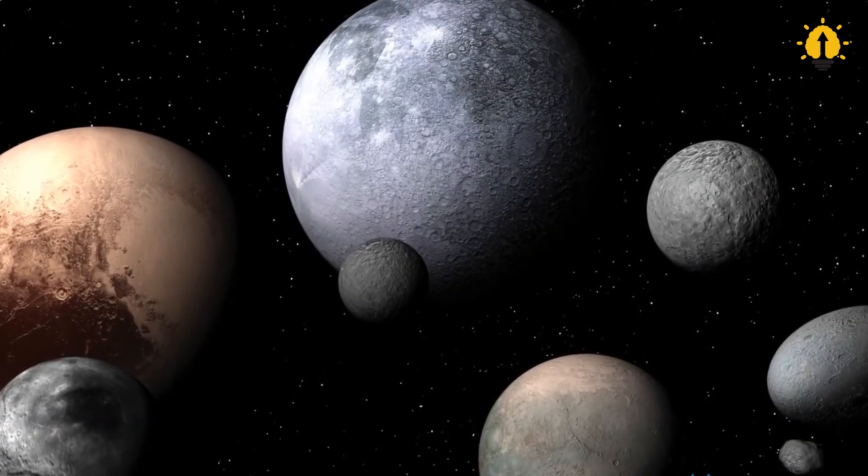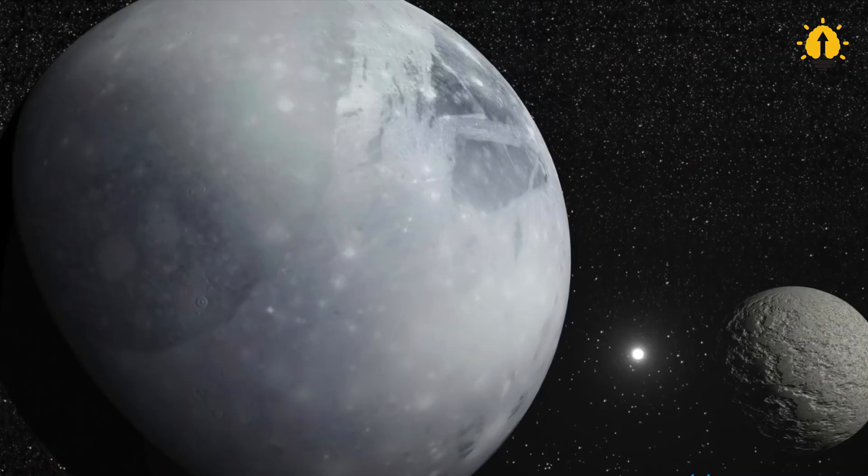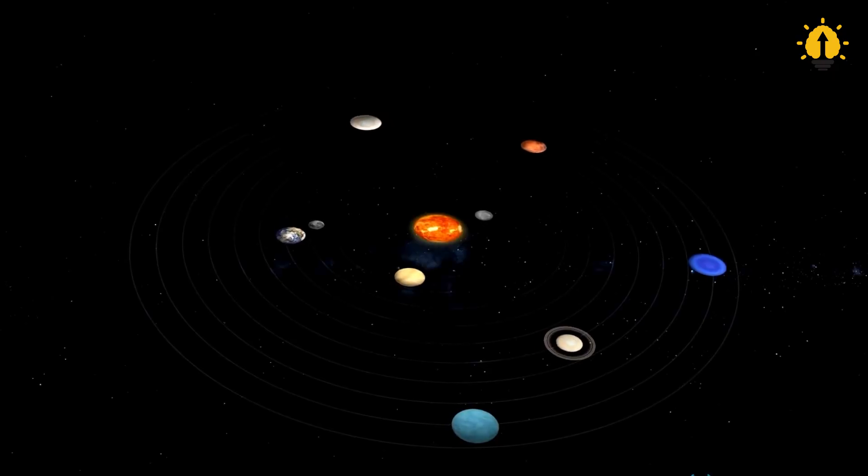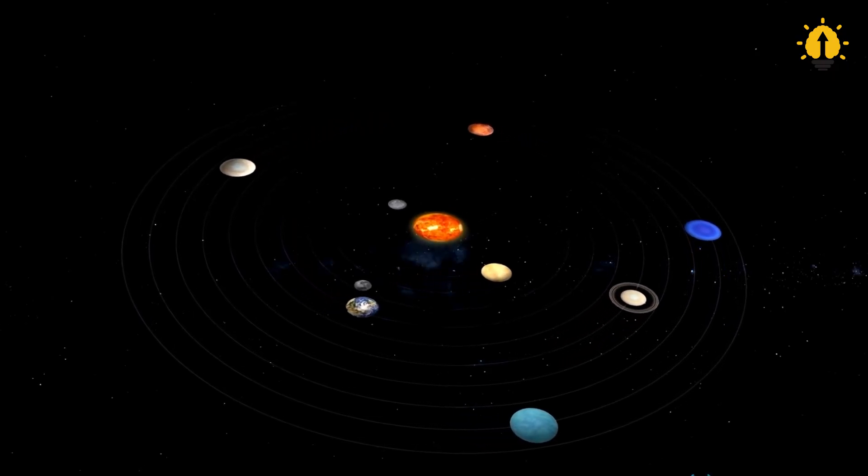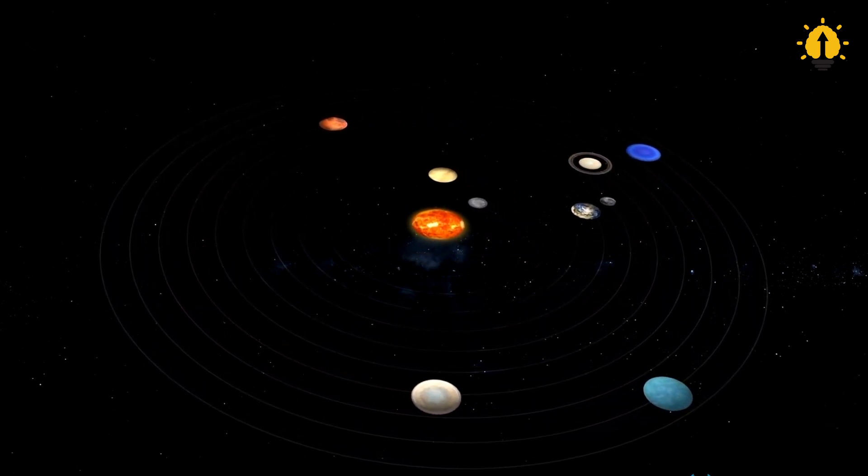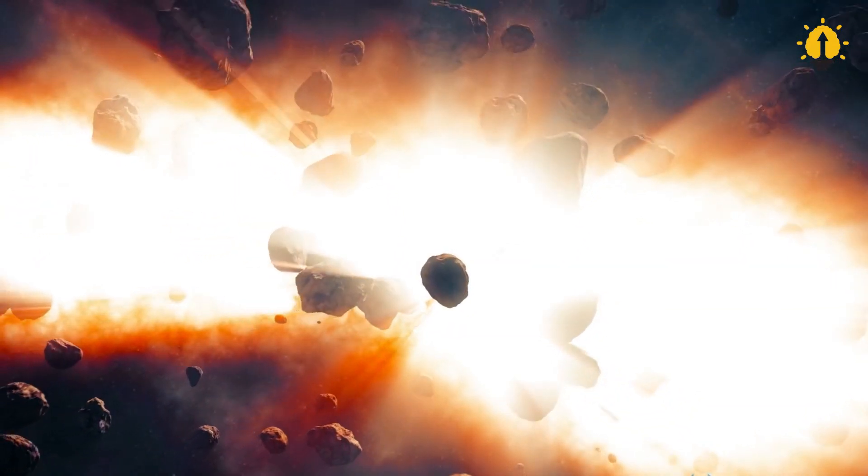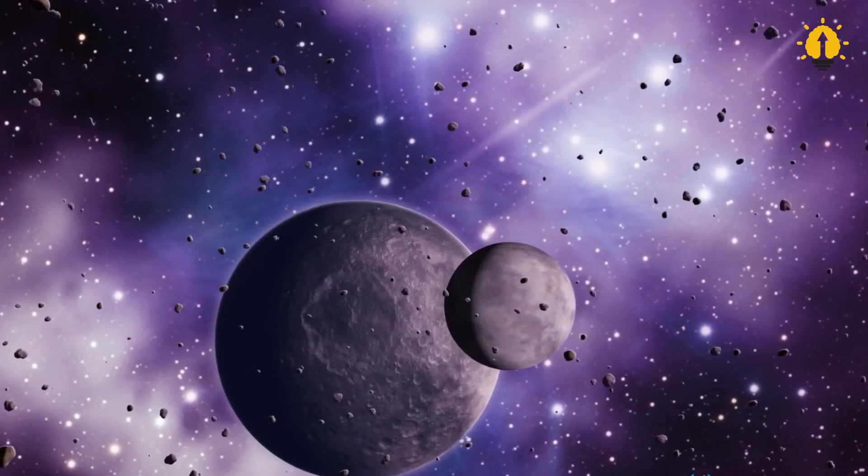While other planets stand on the ecliptic plane, meaning their rotation axis is nearly perpendicular to the ecliptic plane, Pluto's rotation axis is parallel to the ecliptic plane, meaning it lies in the orbit around the Sun. This indicates that it has collided with a planet several times the mass of the Earth in the past.